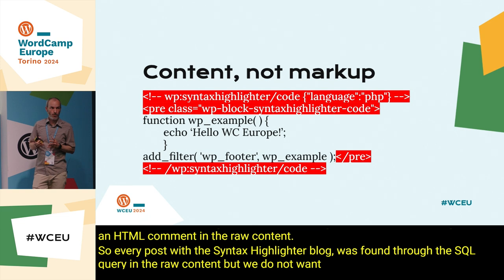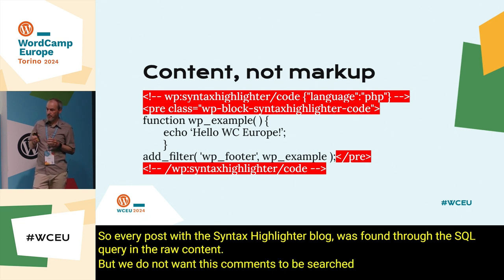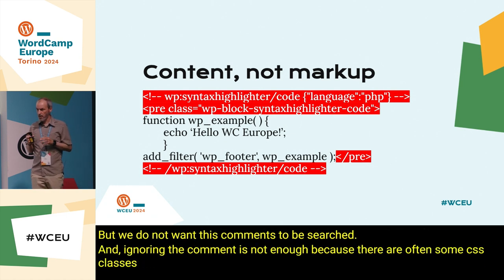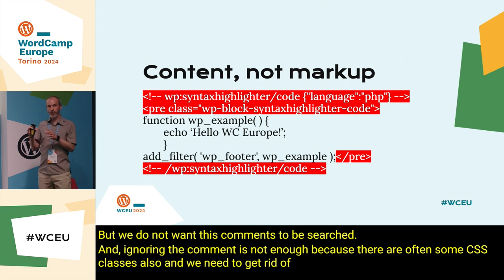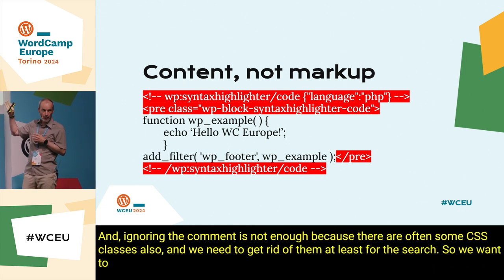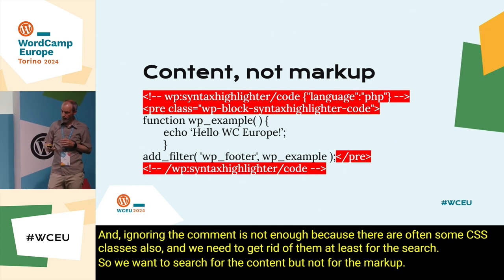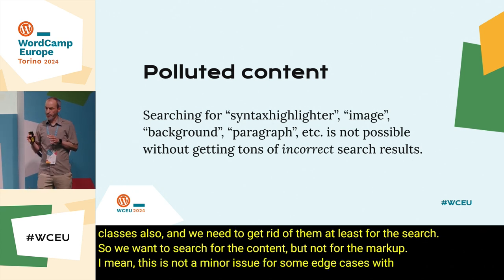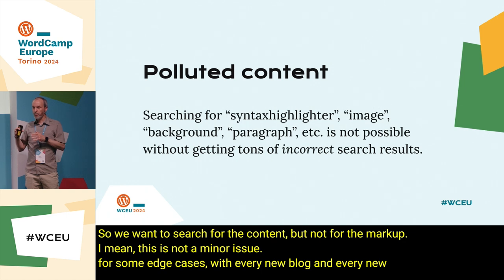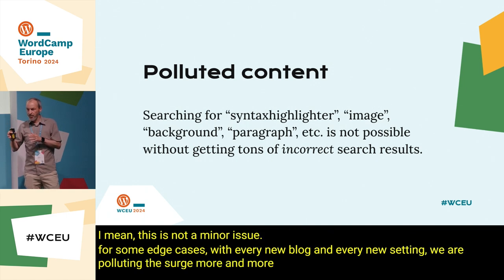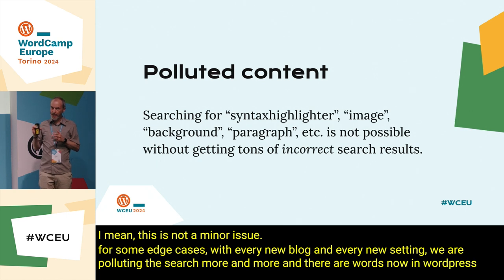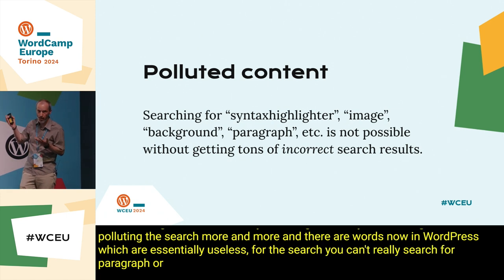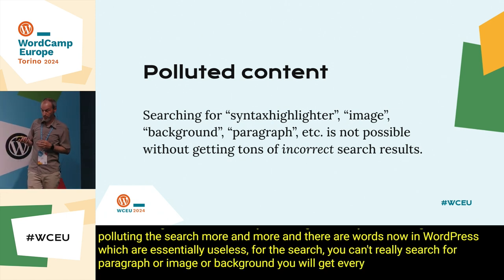But we do not want those HTML comments to be searched. And ignoring the comments is not enough, because there are often some CSS classes also, and we need to get rid of them — at least for the search. We want to search for the content, but not for the markup. This is not a minor issue for some edge cases. With every new block and every new setting, we are polluting the search more and more. There are words now in WordPress which are essentially useless for the search — you can't really search for 'paragraph' or 'image' or 'background'; you will get nearly every blog post.